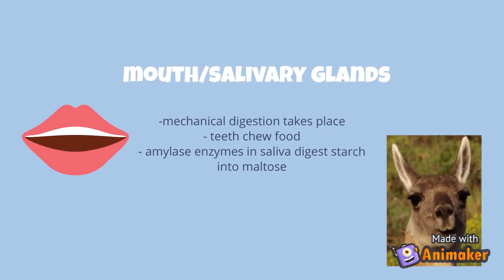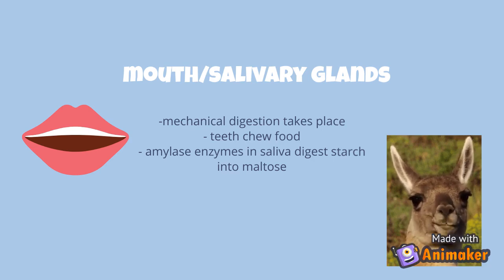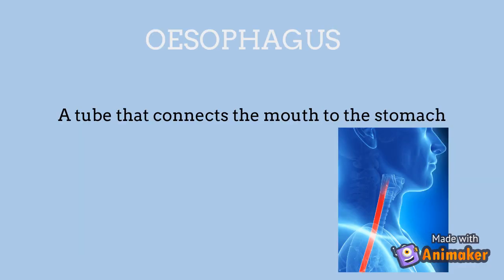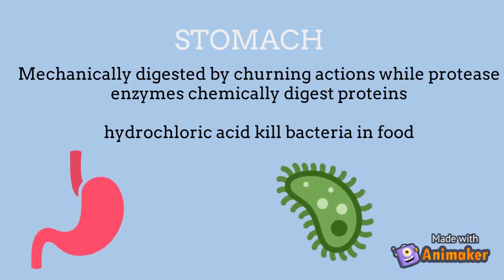Amylase enzymes in saliva digest the starch into maltose. Then is the esophagus — this is a tube that connects the mouth to the stomach, acting as a pathway. In the stomach, both mechanical digestion and chemical digestion take place.